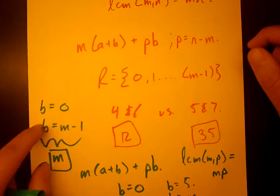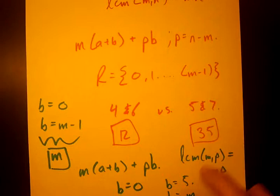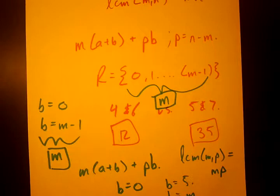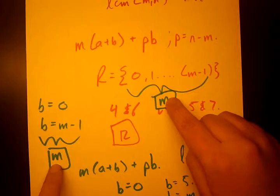So we found that from B equals 0 to B equals M minus 1, we hit M numbers. And how many remainders are in this set?